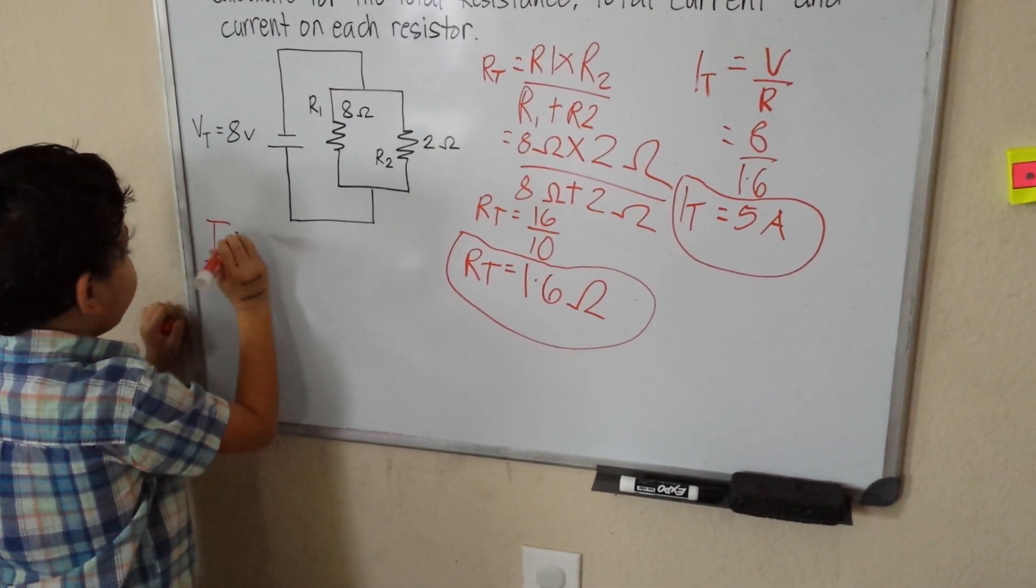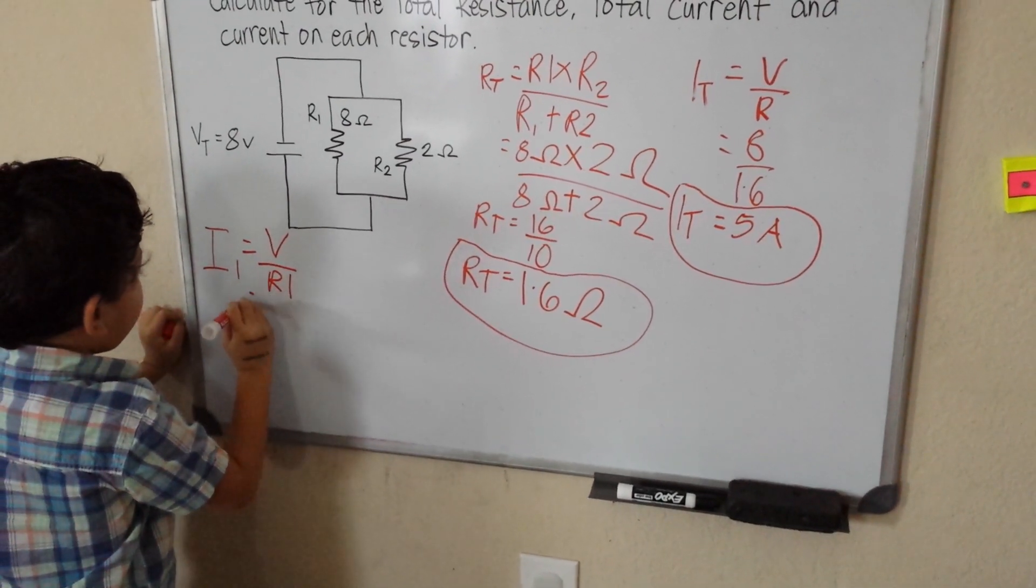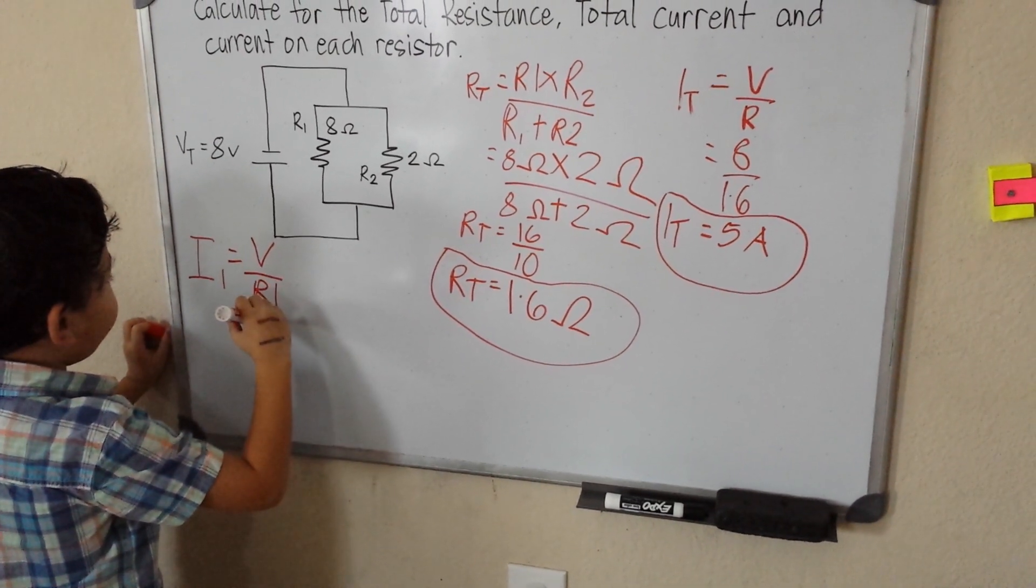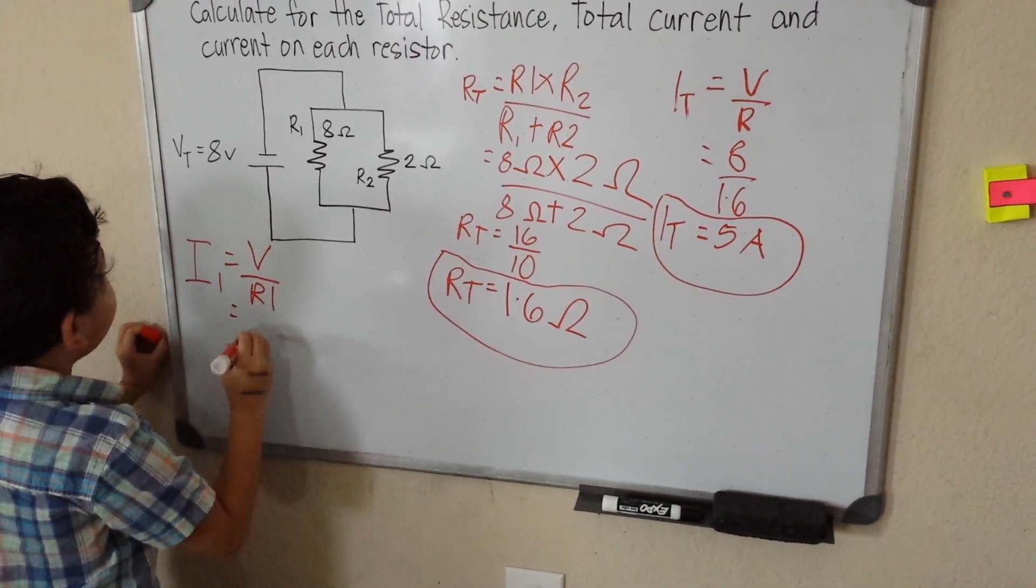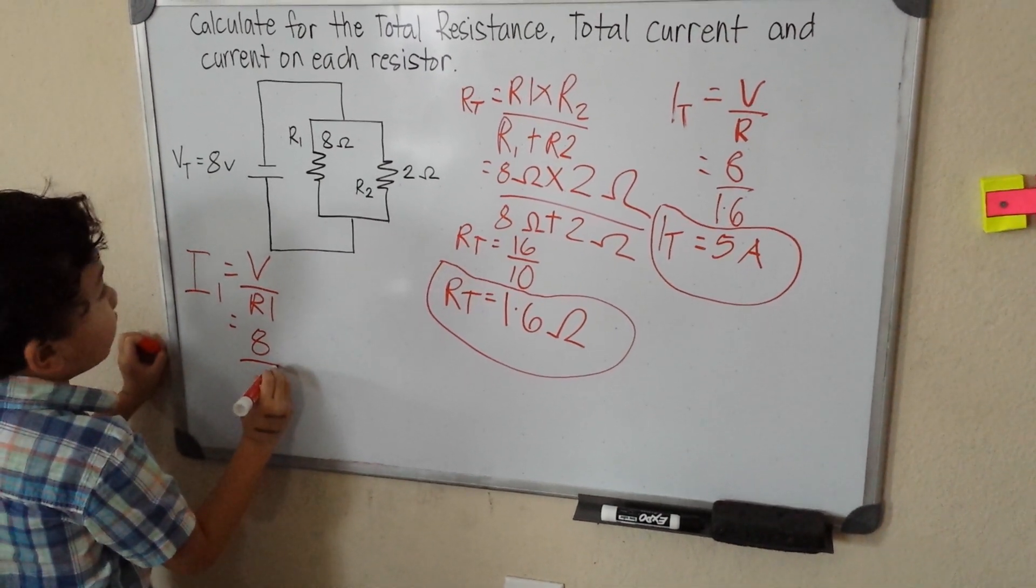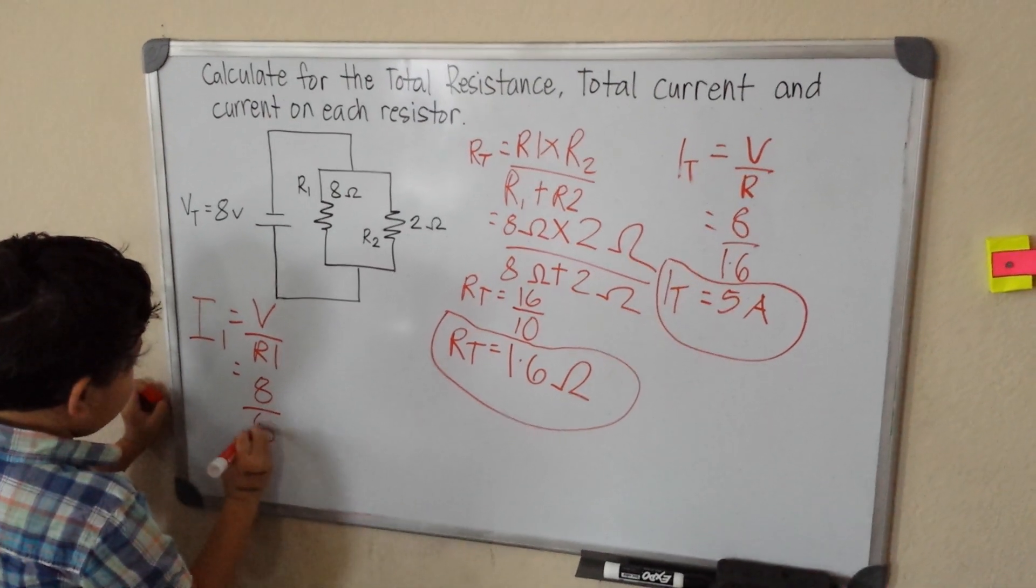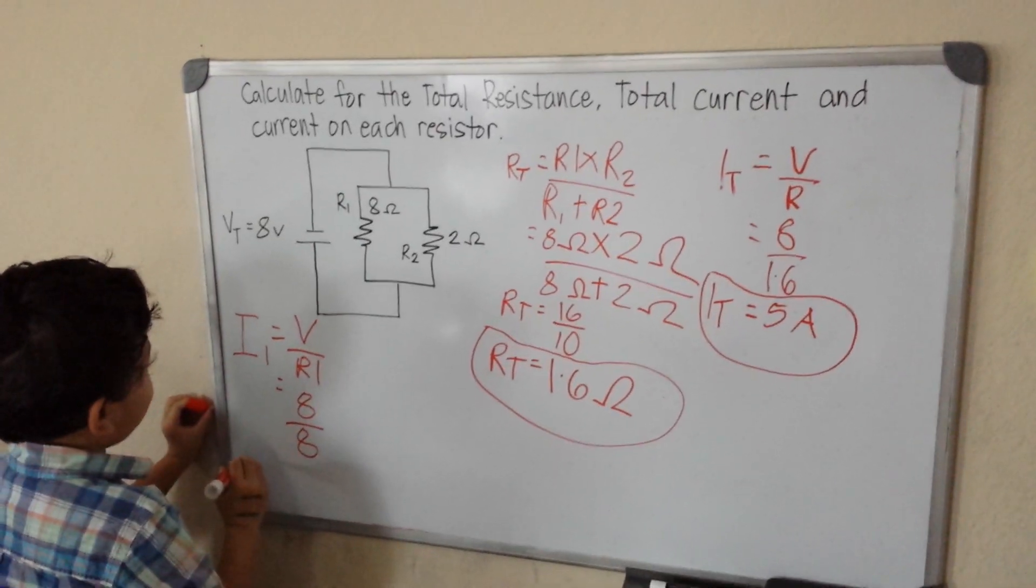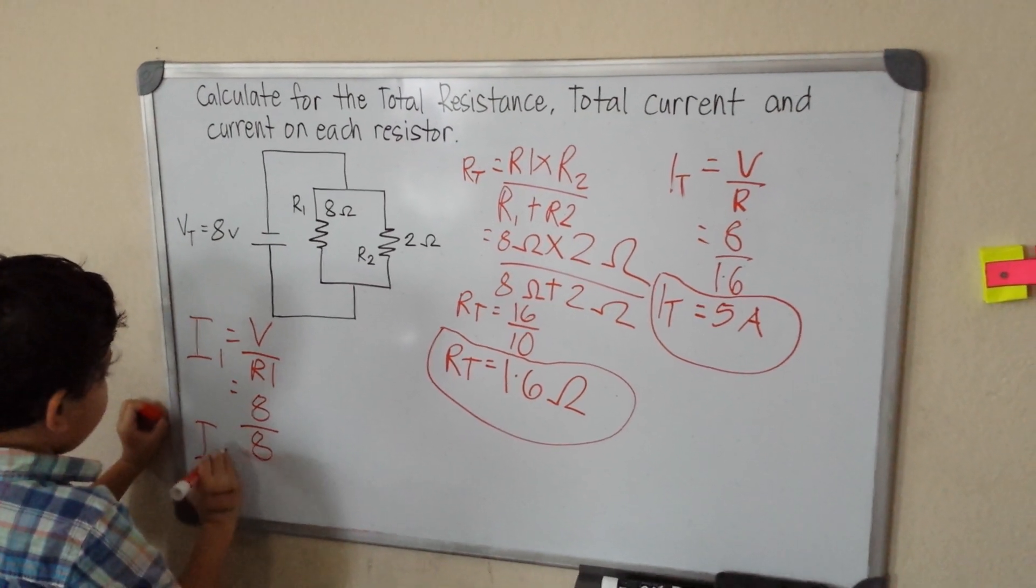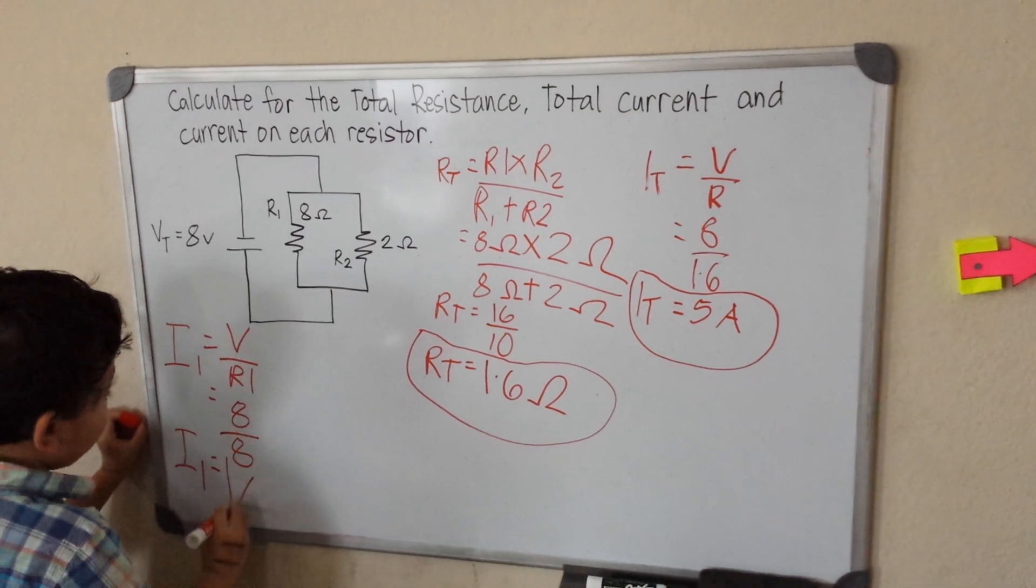So our I1 equals voltage over R1. This is going to be a little different. So V is 8 divided by R1. R1 is 8 too. This is easy. I know 8 divided by 8 is 1 ampere.